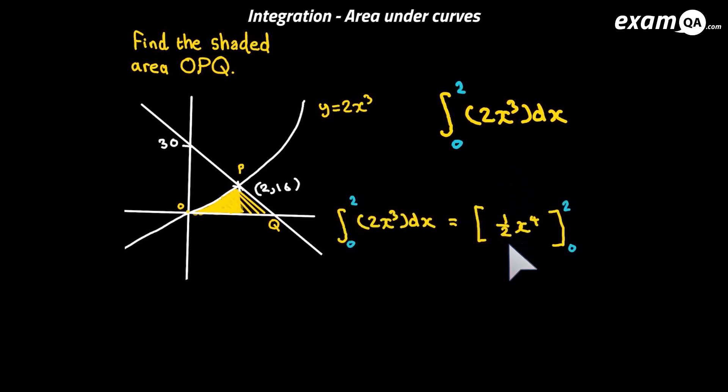We've integrated it and kept the answer in square brackets. Integration should be simple by now. You add 1 to the power, divide the number in front by that new power. But we haven't yet used the limits. So how are we going to apply these limits? You put the upper limit in, which is 2, then you put the lower limit in, which is 0, and you minus the 2. That's it. And we get 8.